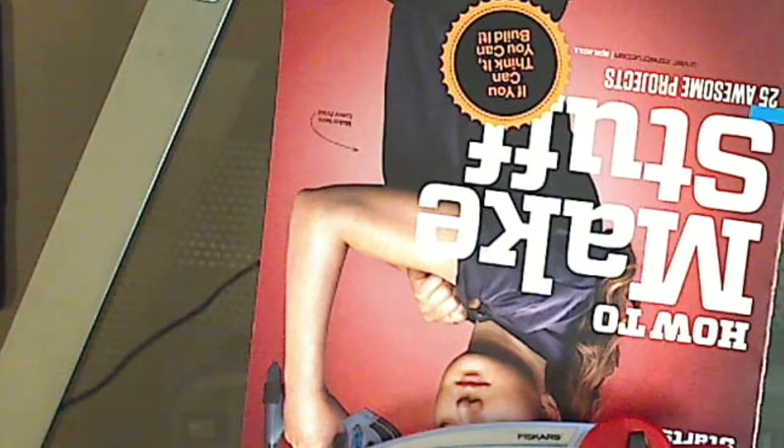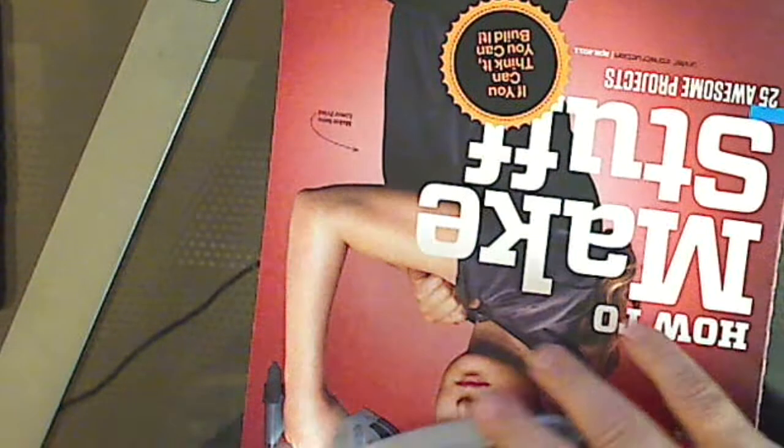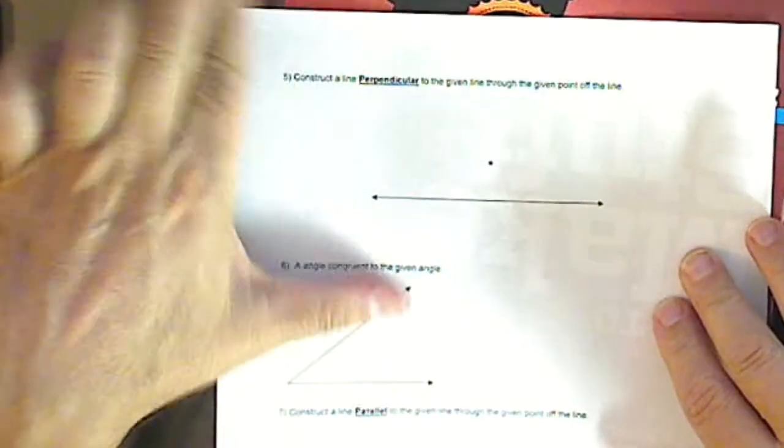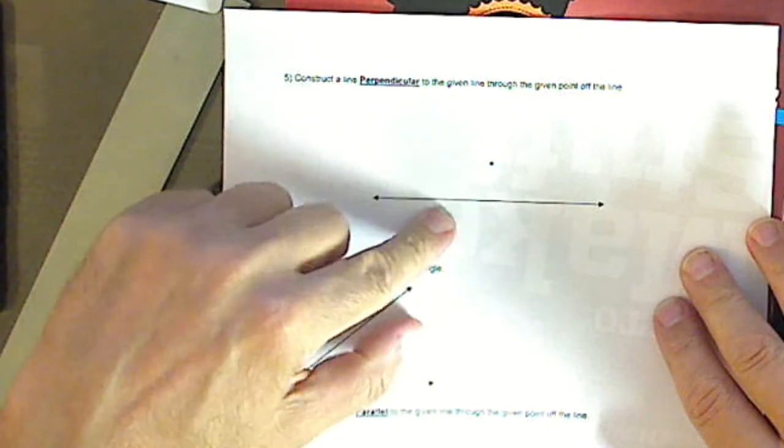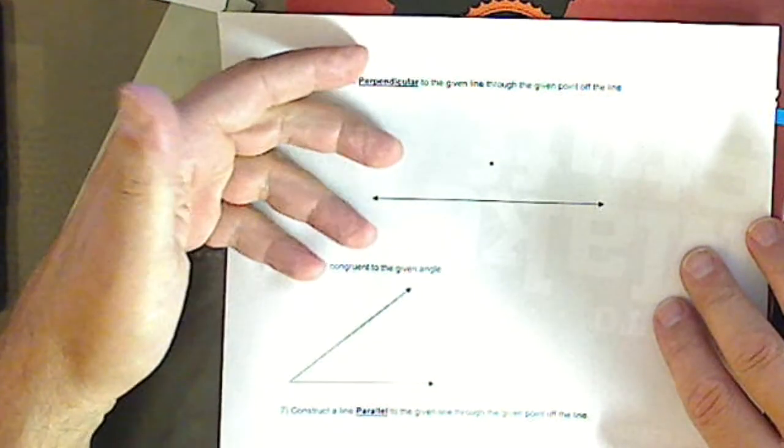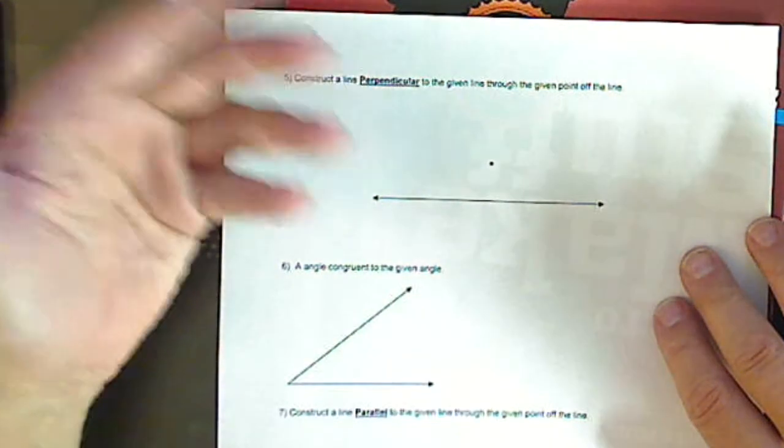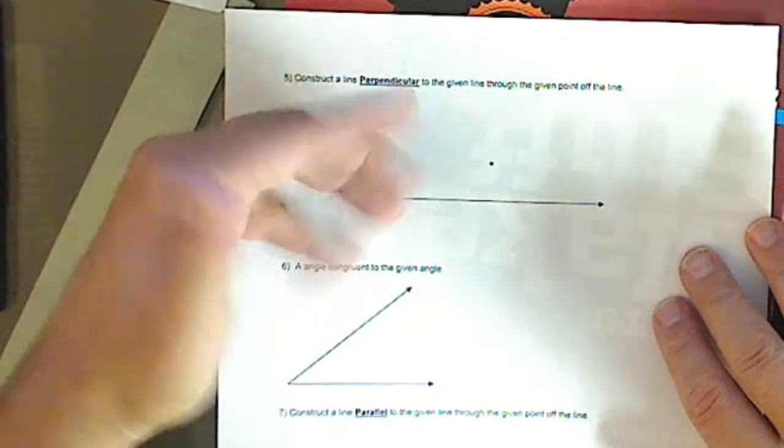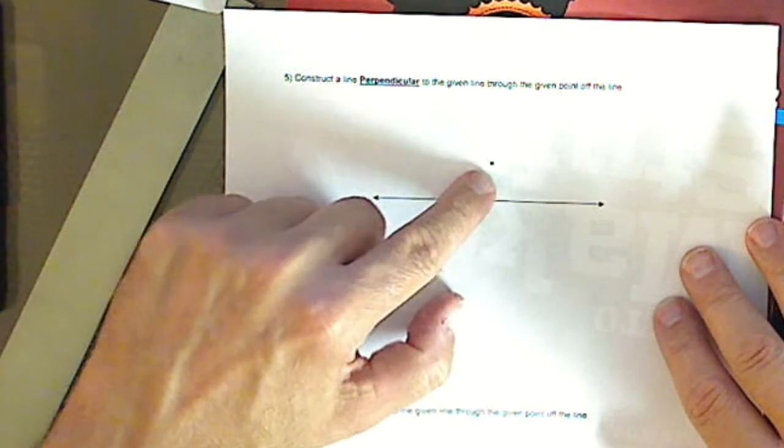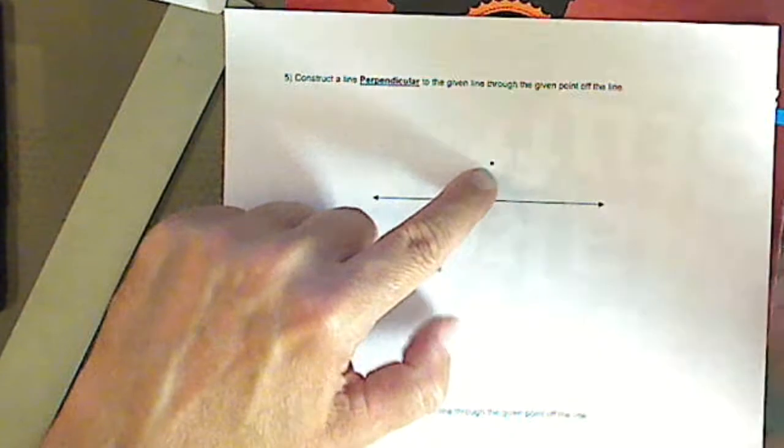Our next construction is similar to number 3, except we want to be perpendicular to this line through a point not on the line. Well, it's pretty much like construction 3. We need to carve out a segment in this line where the endpoints of the segment are equidistant from this point not on the line.